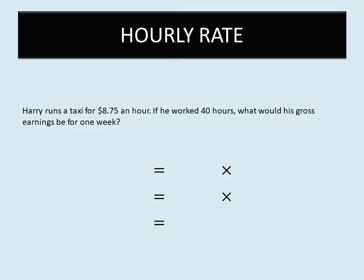Harry runs a taxi service and he's paid $8.75 an hour. If he works for 40 hours, what would his gross earnings be for one week? There are several things in this question: number one, you see how much he makes per hour; number two, he works 40 hours; and number three, it's asking for his gross earnings for one week. Gross earnings means how much he makes before tax is deducted.